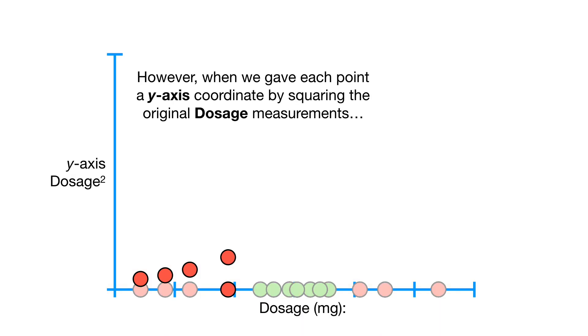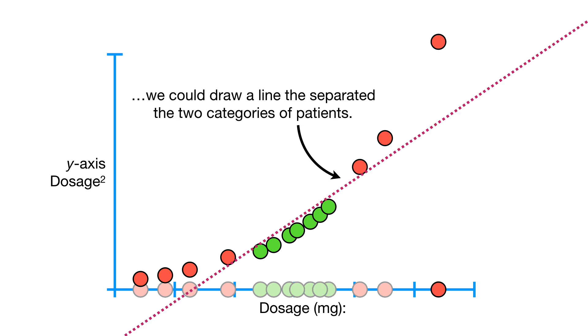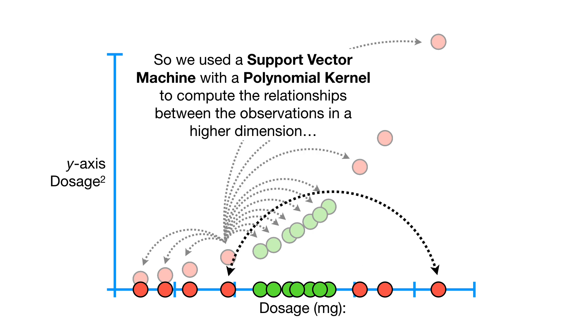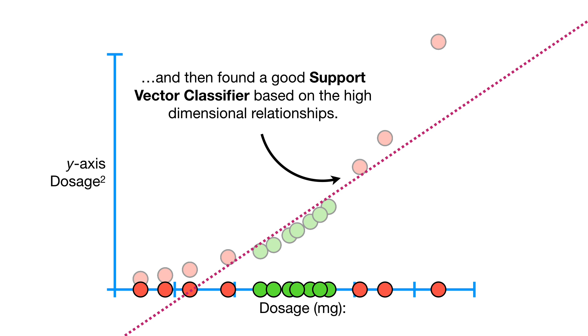However, when we gave each point a y-axis coordinate by squaring the original dosage measurements, we could draw a line that separated the two categories of patients. So we used a Support Vector Machine with a polynomial kernel to compute the relationships between the observations in a higher dimension, and then found a good Support Vector classifier based on the high-dimensional relationships.